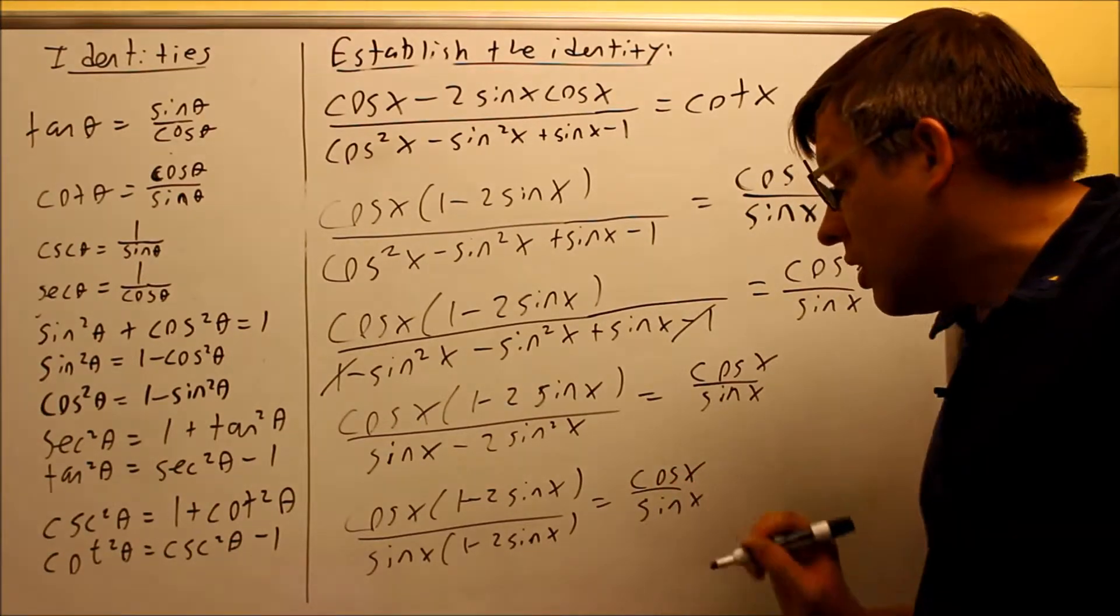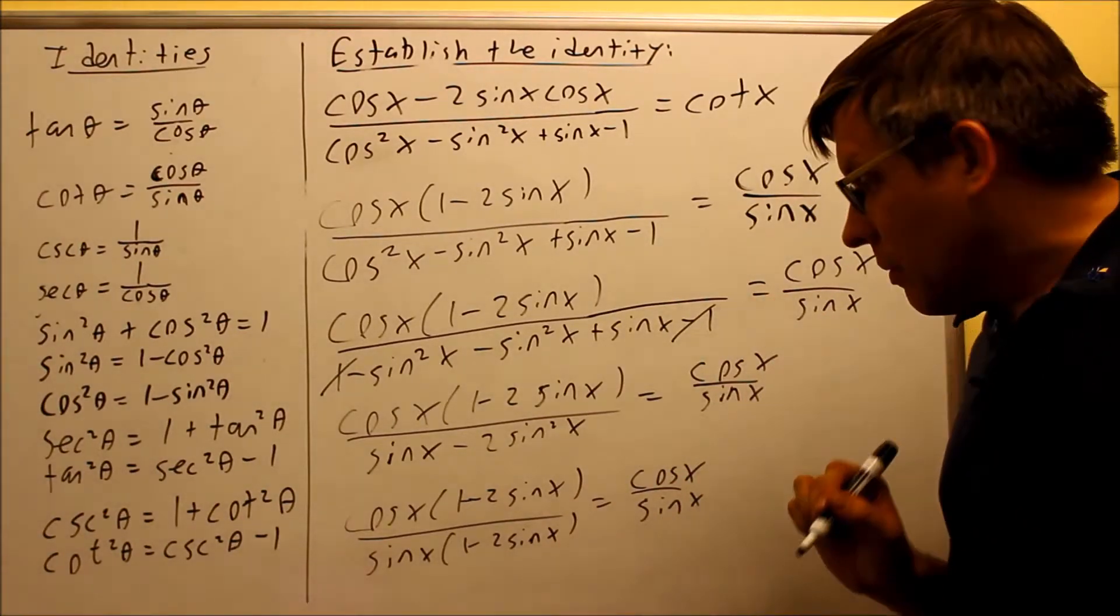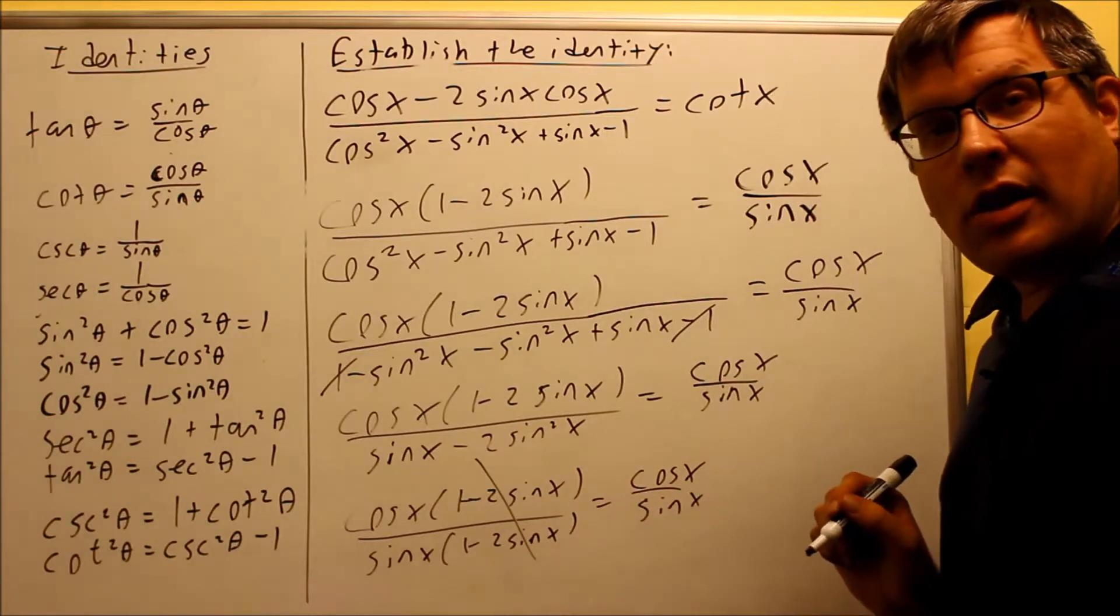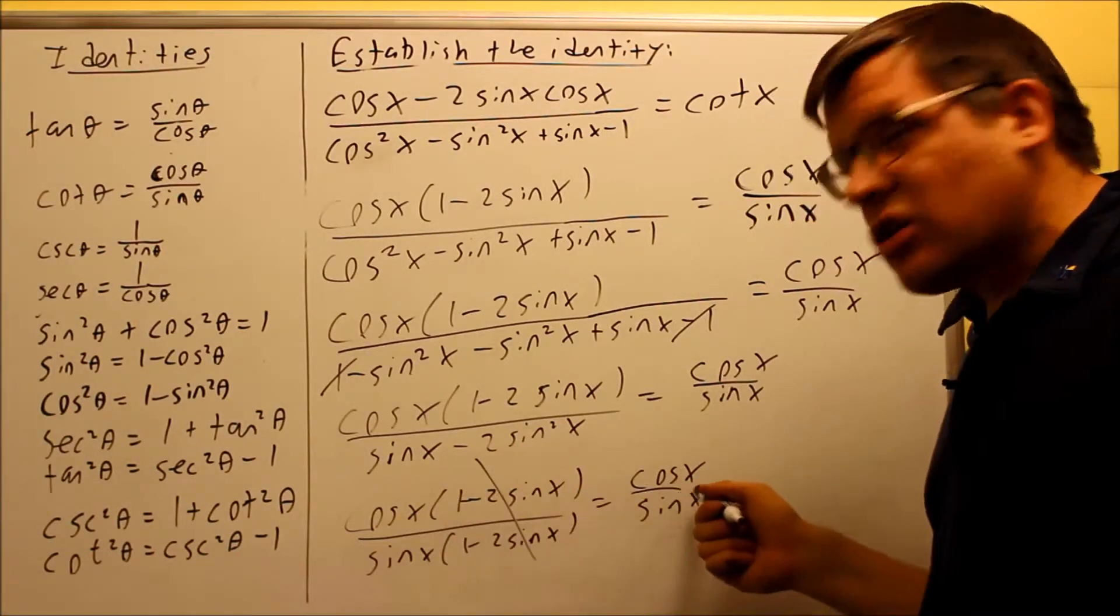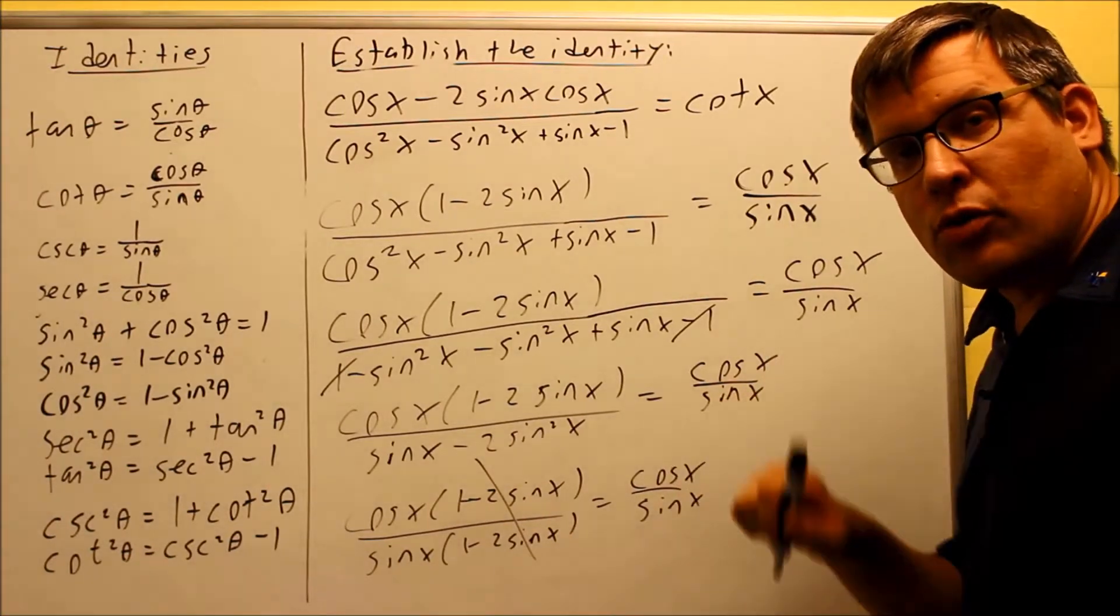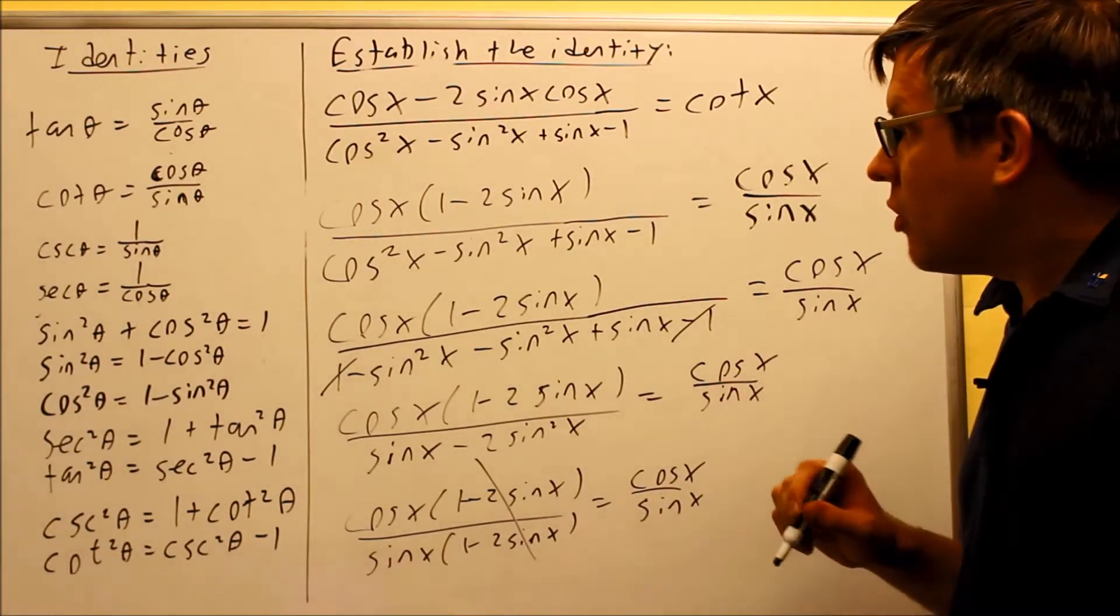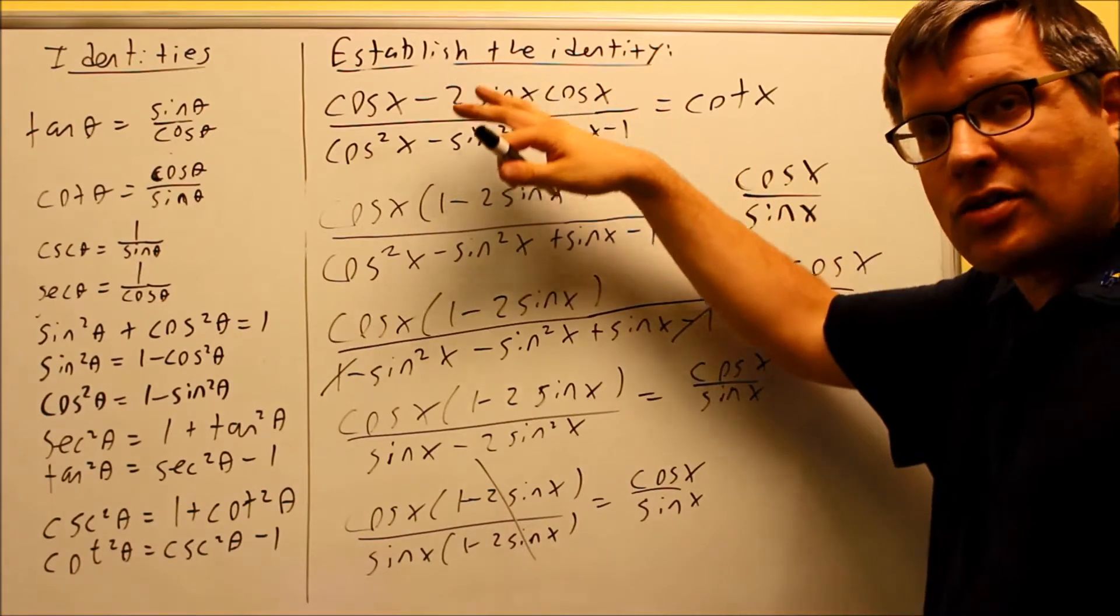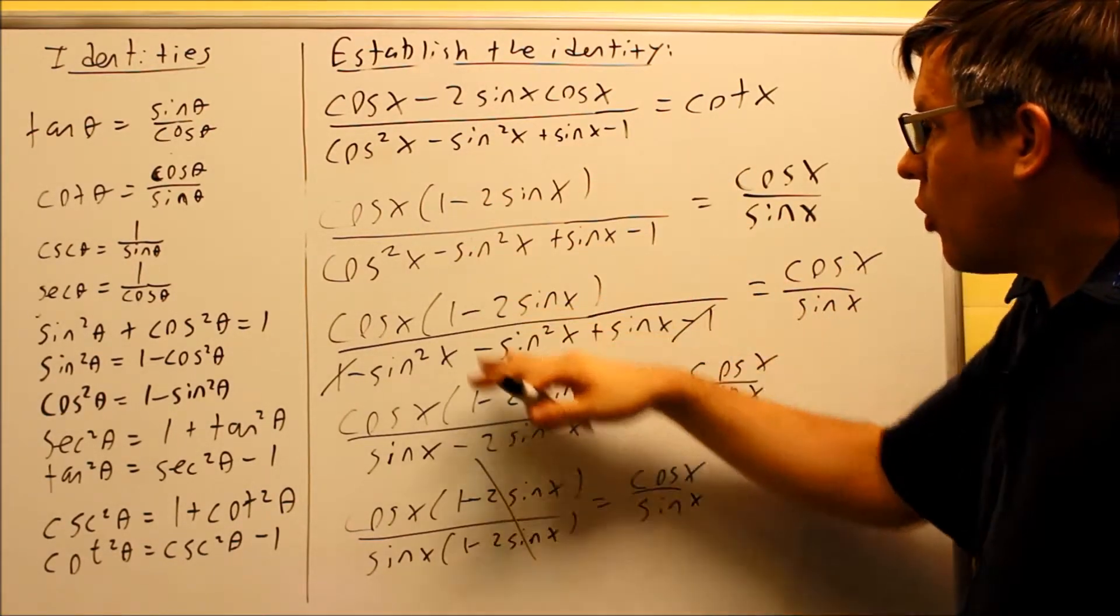So what happens here, the way I can get both sides equal, is if I just cancel that part out there, then all of a sudden I will have both sides equal. So then cosine x over sine x equals cosine x over sine x. I've proven now that both sides are equal. And again, my answer is my process, showing from one side all the way down.